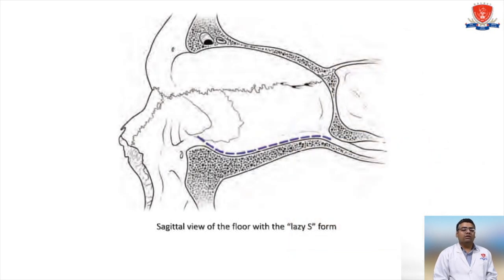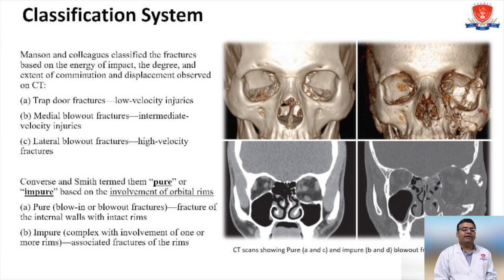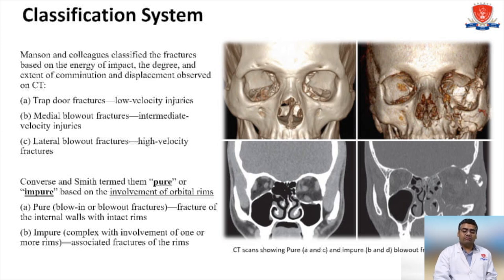Classification of orbital fractures: Manson and colleagues classified fractures based on the energy of impact and degree of comminution — displacement, trap-door fracture, medial blowout fracture, and lateral blowout fracture. Low velocity fractures are trap-door fractures; intermediate velocity: medial blowout; lateral high velocity fractures. Converse and Smith termed fractures as pure and impure based on involvement of the orbital rim. Pure blowout fracture involves fracture of the internal wall with an intact rim. Impure or complex involves one or more rim fractures.